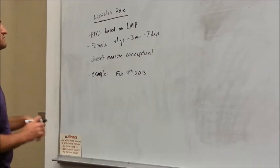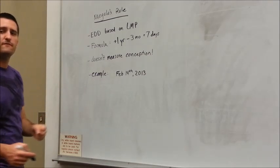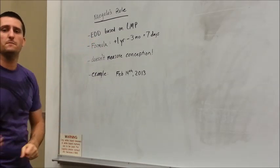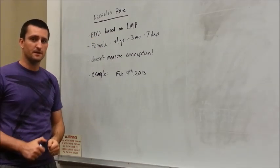Okay, let's quickly cover Naegele's rule. Naegele's rule is figuring out when we're going to have our estimated delivery date, and this is based on the woman's last menstrual period.